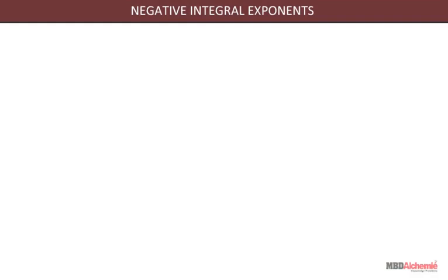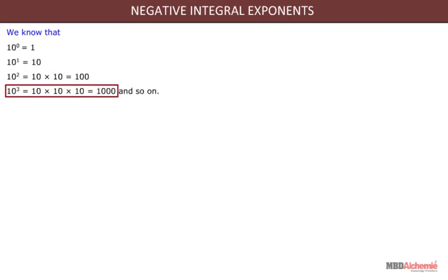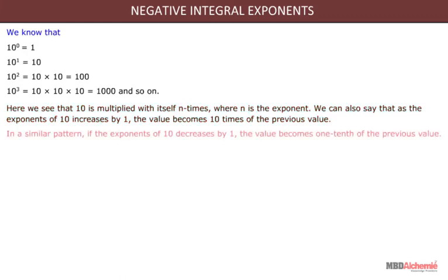Here we will learn about negative integral exponents. As we know, 10 to the power 0 is equal to 1, 10 to the power 1 is equal to 10, 10 to the power 2 is equal to 10 into 10, which is equal to 100, and 10 to the power 3 is equal to 10 into 10 into 10, which is equal to 1000. Here we see that 10 is multiplied with itself n times, where n is the exponent. We can also say that as the exponents of 10 increase by 1, the value becomes 10 times the previous value.